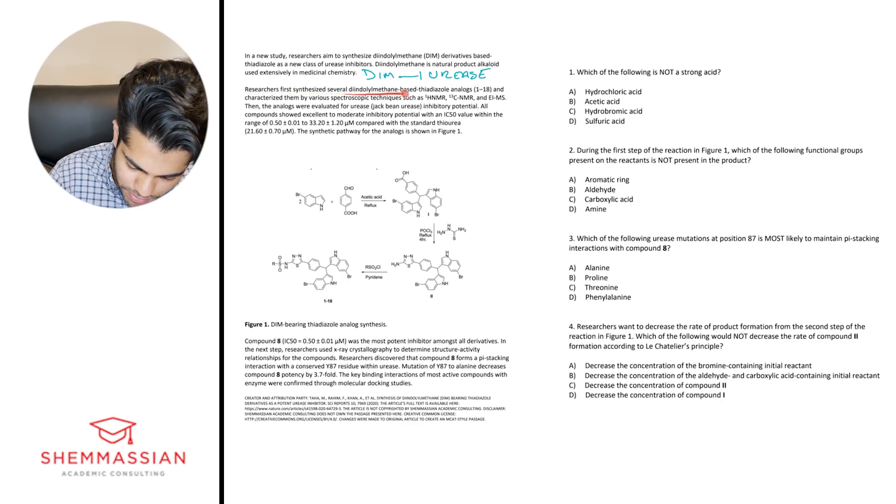Alright, let's go ahead and dive into the second paragraph. Researchers first synthesized several DIM-based thiodiazole analogs 1 through 18 and characterized them by various spectroscopic techniques such as 1H NMR, 13C NMR, and EIMS. Then the analogs were evaluated for urease, parentheses they give us Jack being urease, inhibitory potential. All compounds showed excellent to moderate inhibitory potential with an IC50 value within the range of 0.5 plus or minus 0.01 to 33.2 plus or minus 1.2 micromolars. Compared with the standard thiourea, parentheses they give us 21.6 plus or minus 0.7 micromolars.